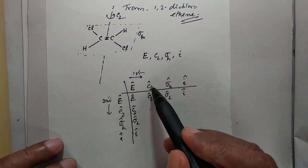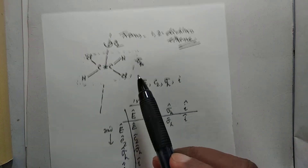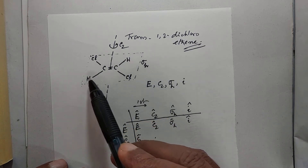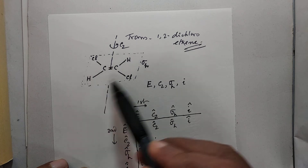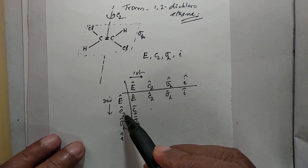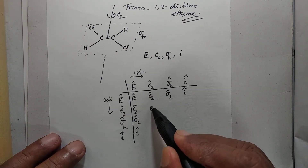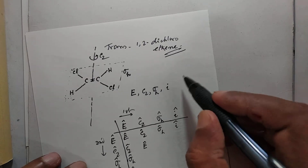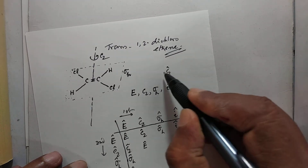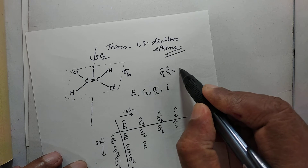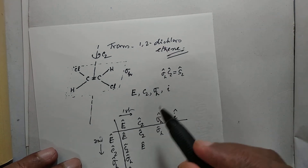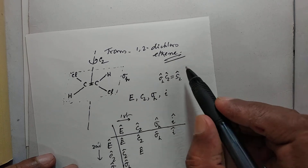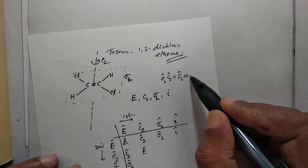Now C₂ first and then again C₂: this means the molecule is turned to one position and then turned again — a total of 360° rotation — so C₂² is identity. C₂ followed by σh: you may be tempted to write this as S₂. This is correct, and we can find that S₂ is nothing but i.